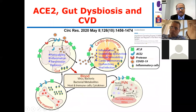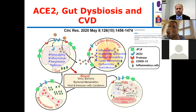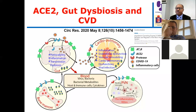If ACE2 is reduced in the intestine by the virus, there is gut dysbiosis — a disturbance of the gut microbiome. This leads to increased inflammation and permeability. The dysbiosis triggers a cascade of inflammation; bacteria find their way into the bloodstream with subsequent damaging effects on cardiopulmonary status and other body systems. This links ACE2 with gut dysbiosis and cardiovascular disease.